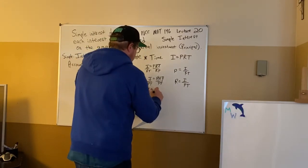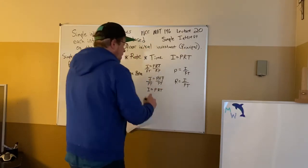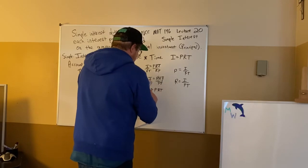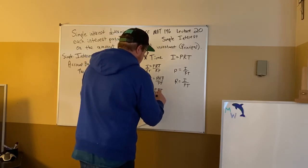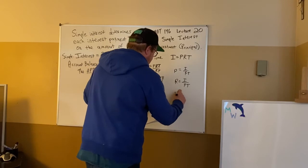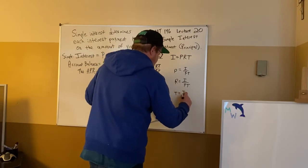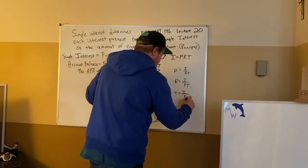And finally, I equals PRT. And we want to get the T alone. I'm going to divide each side by P and R. And I'm going to get the time equals total interest divided by P and R.